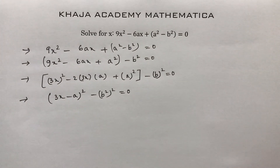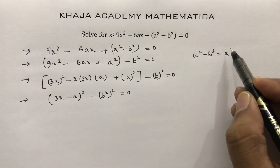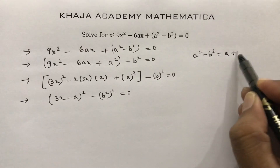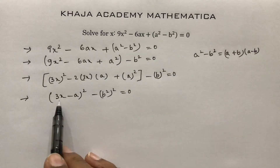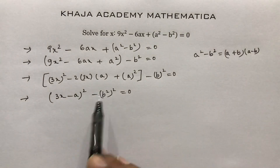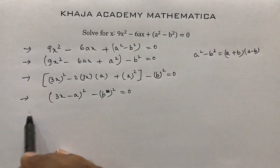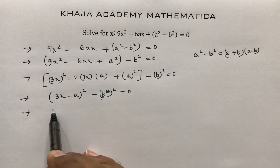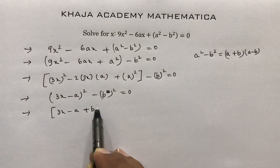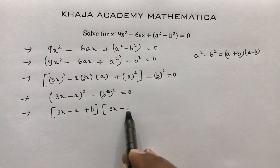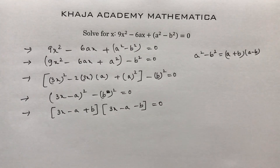This is in the form a² - b², so apply a² - b² = (a + b)(a - b). Here a = (3x - a) and b = b. So: (3x - a + b)(3x - a - b) = 0.